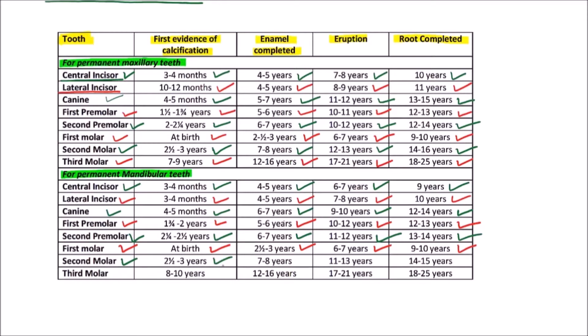For the mandibular second molar, the first evidence of calcification is observed between 2⅕ to 3 years, enamel is completed by 7 to 8 years, eruption occurs by 11 to 13 years, and the root is completed by 14 to 15 years.